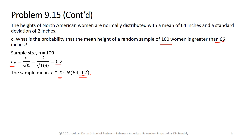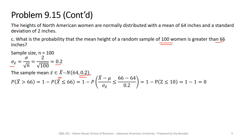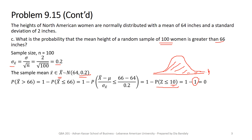This sample mean from a sample of 100 belongs to a distribution with standard deviation 0.2. Writing the probability statement and standardizing gives us p(z ≤ 10). The z-table shows values between -3.99 and +3.99, so z = 10 is at the very, very far end of the tail — that area is essentially 1. Therefore, there is almost 0% chance of getting a mean height greater than 66 when the sample size is 100.